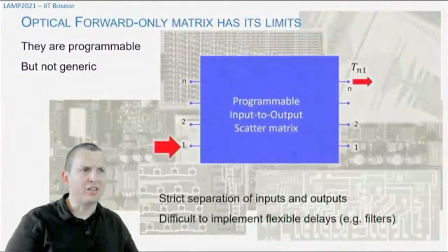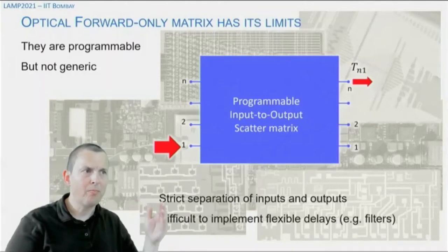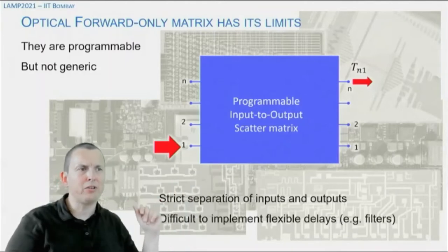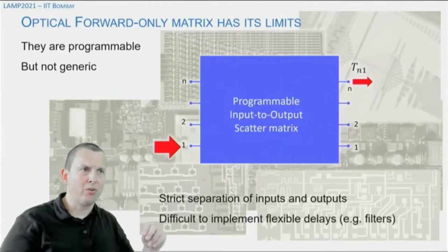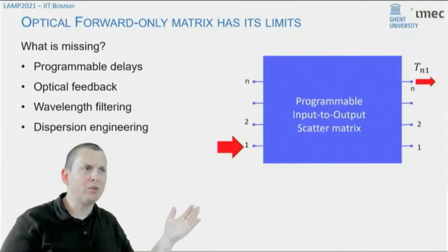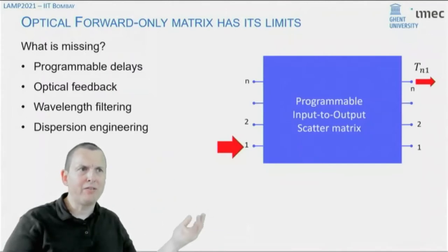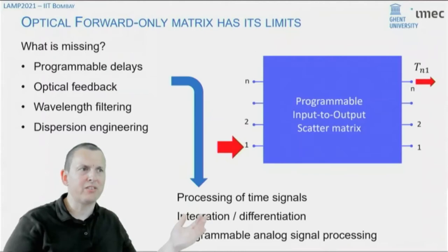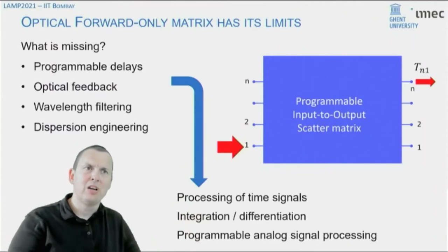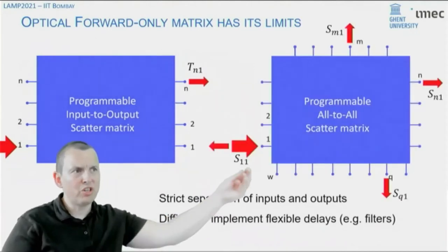It's important to note that all these examples of forward-only circuits are always made for one particular application — they're programmable, but not really generic. They don't fully satisfy the definition we set out. What are the limitations? First, there's a strict separation of inputs and outputs. It's also very difficult to implement delays in these circuits, and delays are an essential requirement to build optical filtering circuits. What's missing in these forward-only circuits is delays, a way to do feedback — which gives you wavelength filtering and dispersion engineering — and the ability to do processing of time signals, like integration or differentiation, turning your photonic circuit into an analog signal processor.